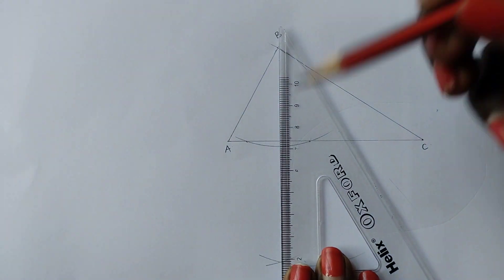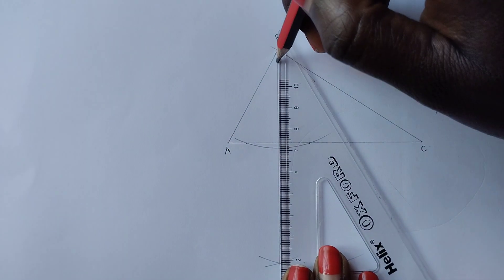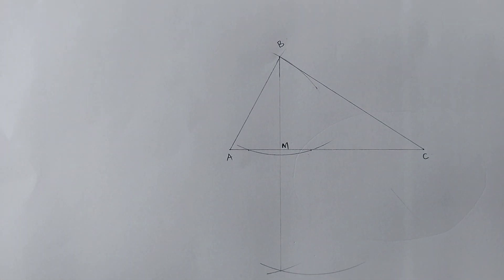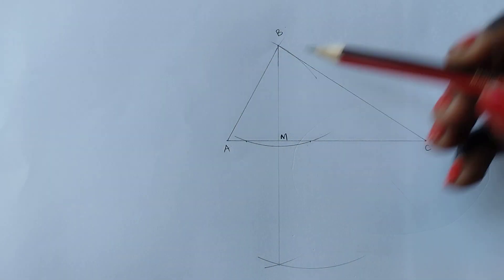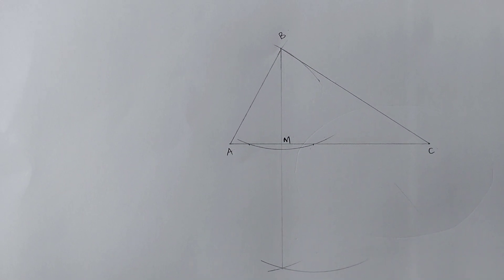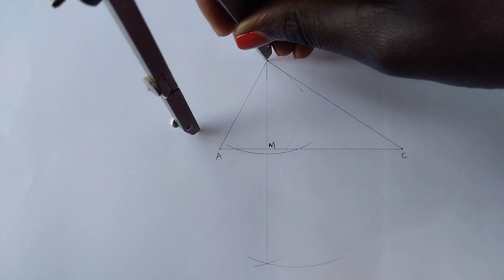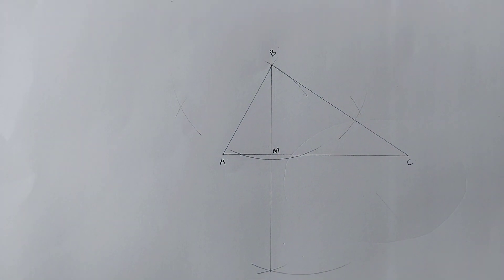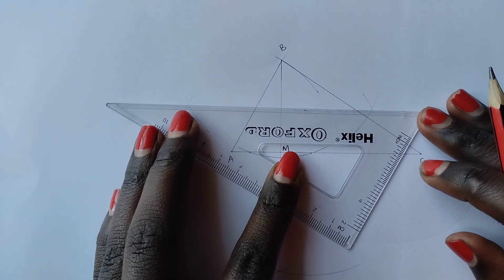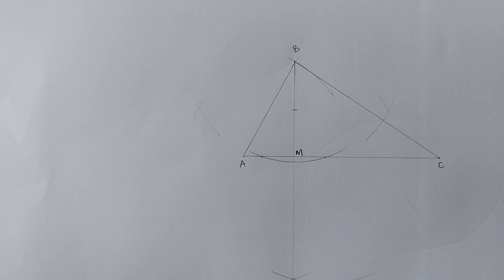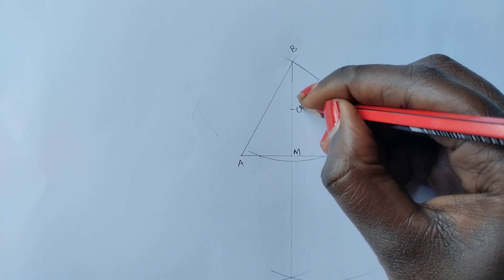Draw a line passing through the points of intersection of our arcs up to point B to establish the height of our triangle. We can name this intersection point as point M, so the height of our triangle is BM. To construct the rectangle, we're going to bisect height BM — that is, divide it into two equal parts — and we can mark this midpoint as point O.